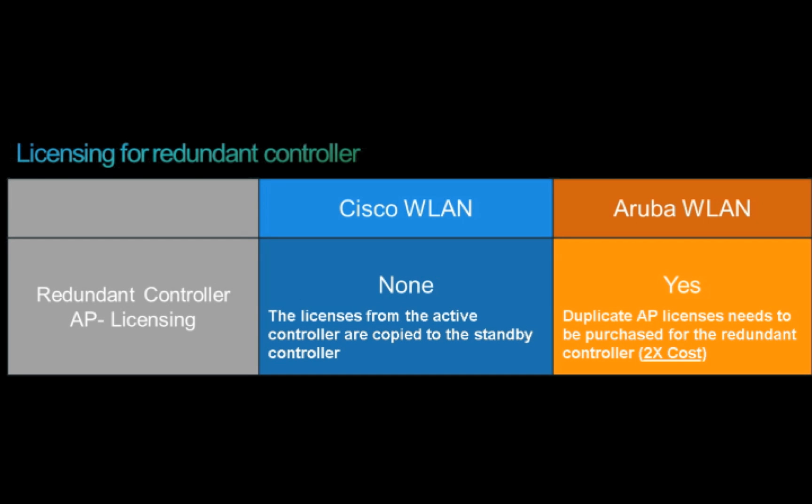Also starting with version 7.3, you don't need any additional AP licenses on the redundant controller for Cisco Systems, as the licenses from the active controller are copied over to the standby. But for Aruba wireless systems, you actually need to buy twice the licenses — one for the active and one for the redundant controller — doubling your cost.